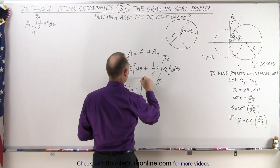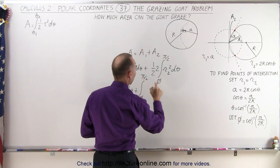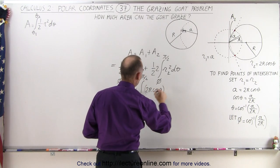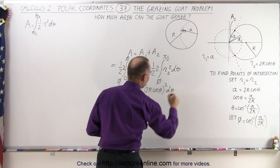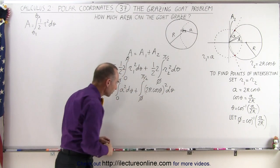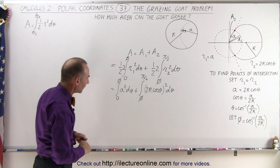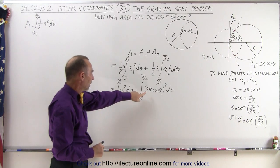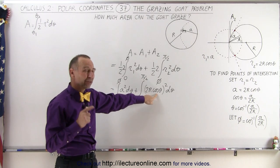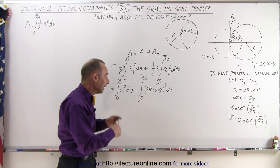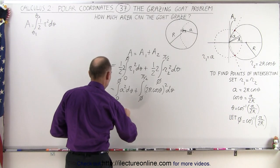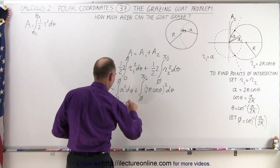...from φ to π/2, giving us (2R cosθ) quantity squared times dθ. Now we can already begin integrating. Factoring that out, we end up with cosine squared of θ, so we need a trig identity to make it easier to integrate. This becomes A squared times θ evaluated from 0 to φ...